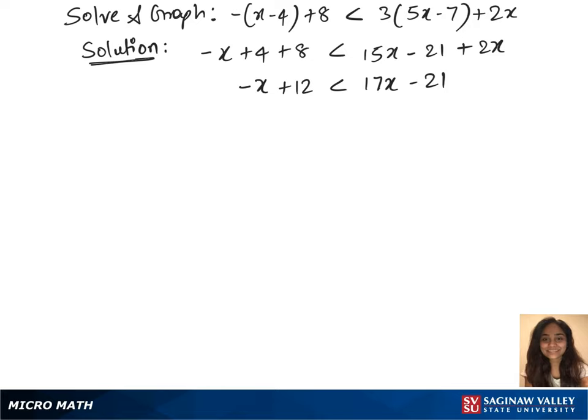Subtract 17x and 12 on both sides. That gives us minus x minus 17x on the left, less than minus 21 minus 12 on the right side.